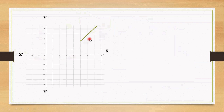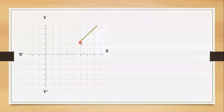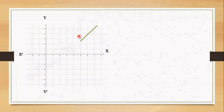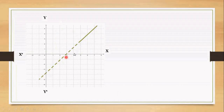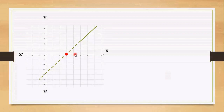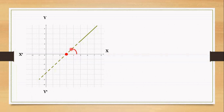Let's measure the inclination of one more straight line. In this example, the straight line is not intersecting with the x-axis. In this case, we produce the straight line to meet the x-axis. Inclination is measured at the intersection of the produced line and the x-axis. From the right portion of the x-axis in the positive direction, the angle measured with the produced line is theta, and this is the inclination.